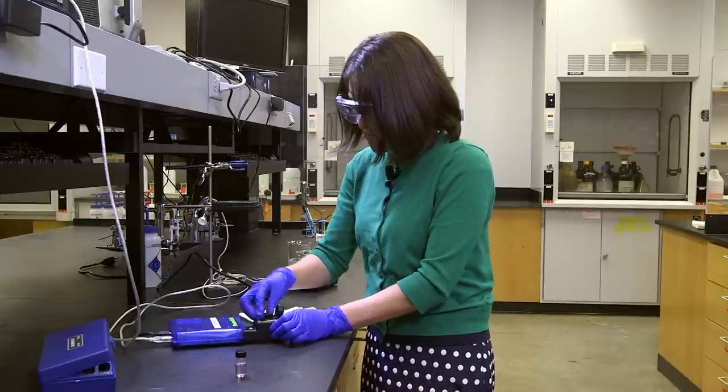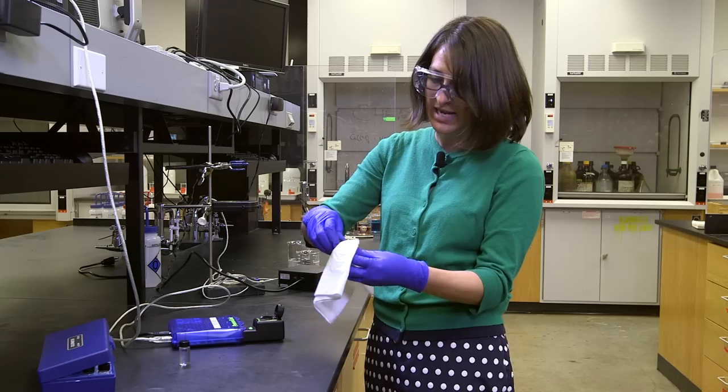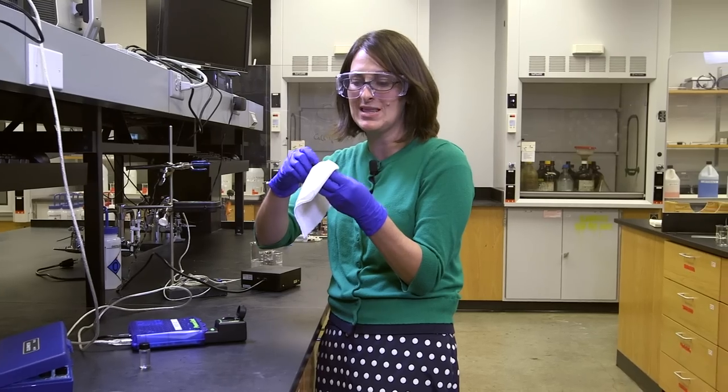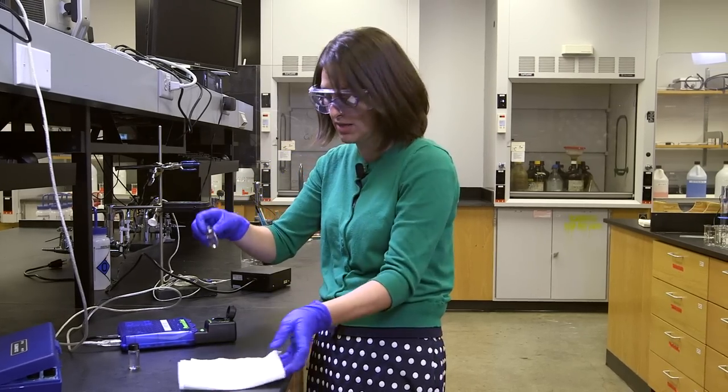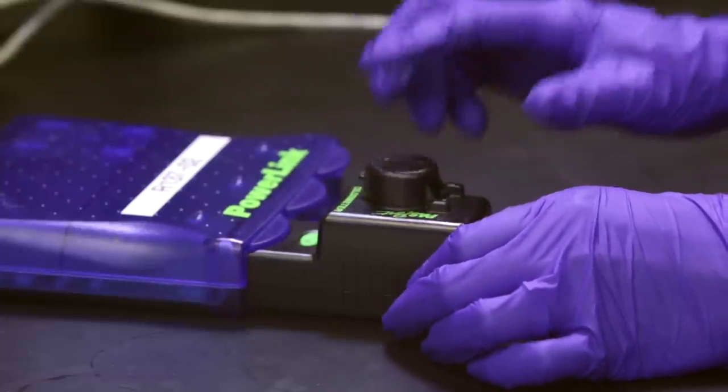Remove your cuvette, and then take your sample that you want to do your reading. I always wipe these off because you don't want anything blocking or interfering with the light that's passing through your sample. Again, close the lid.